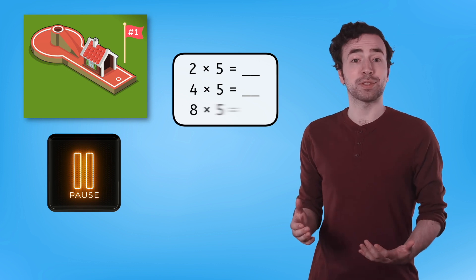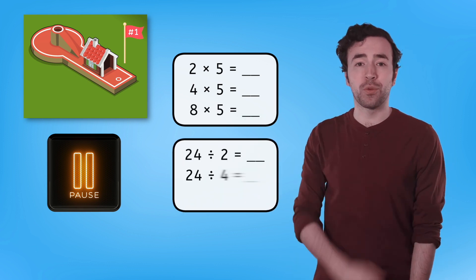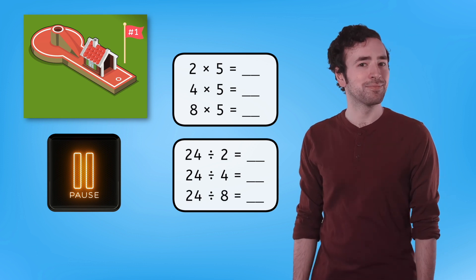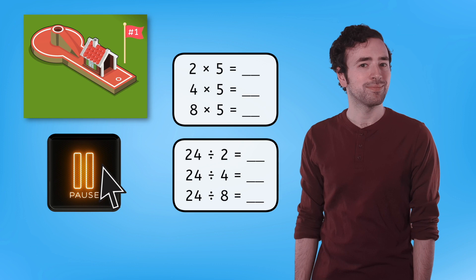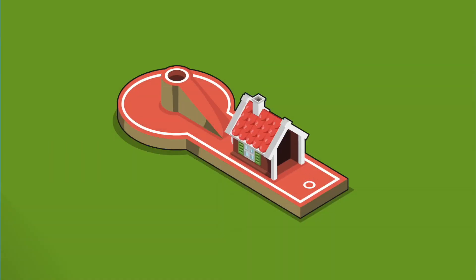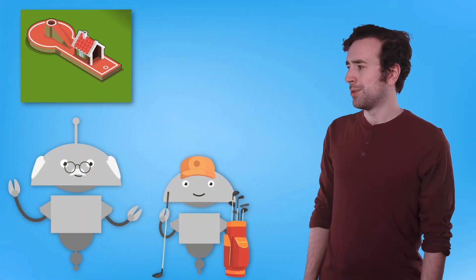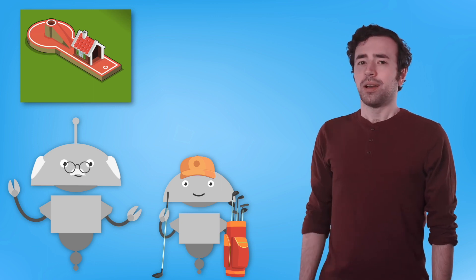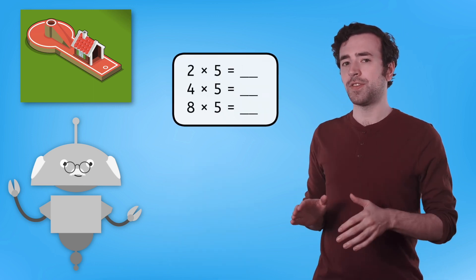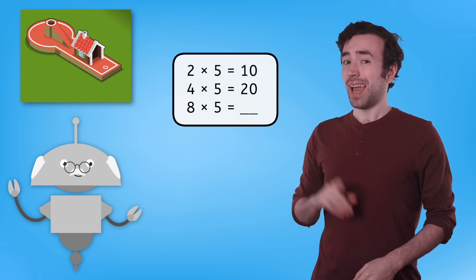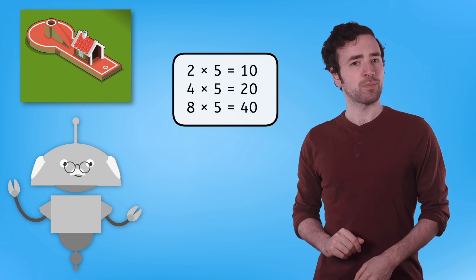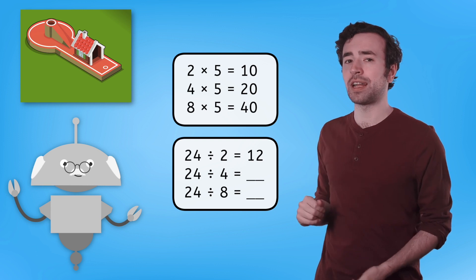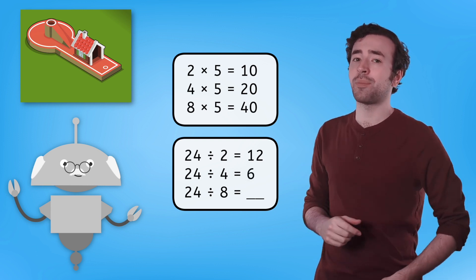Grandpa Nate left us with some warmup problems to solve while he's taking his turn at hole number one. That ramp looks tricky. Pause here to solve two times five, four times five, eight times five, twenty-four divided by two, twenty-four divided by four, and twenty-four divided by eight. Let's check our answers: two times five equals ten, four times five equals twenty, and eight times five equals forty. Twenty-four divided by two equals twelve, twenty-four divided by four equals six, and twenty-four divided by eight equals three.